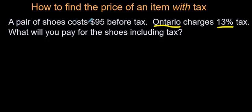It says a pair of shoes cost $95 before tax. Ontario charges 13% tax. What will you pay for the shoes, including tax?